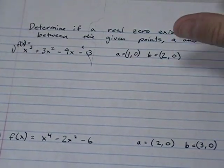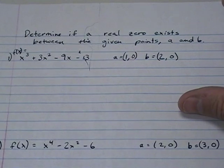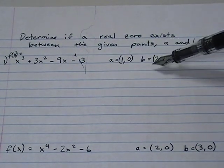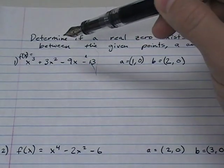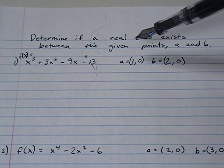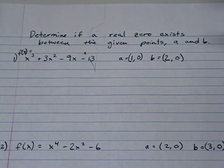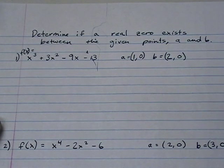So what I'm trying to tell you is this. You're given two values. If you find f of 1 and you find the f of 2 and the sign changes between them, you had to have crossed the x axis between 1 and 2. That's what the intermediate value theorem says.